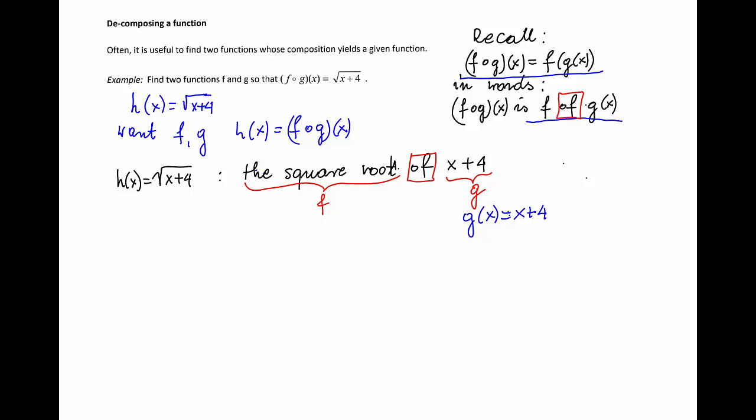For f, we have to translate the phrase. f is the square root, so f(x) is the square root of x. And this gives us the composition f circle g of x is the square root of x plus 4.